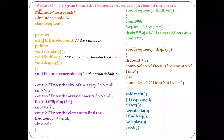Hello everyone. In this video we'll study a C++ program to find the frequency of an element in an array. By frequency, we mean how many times a digit occurs in a given collection of items. We'll study the program line by line.